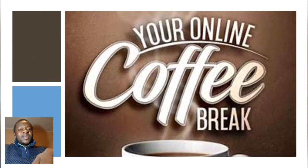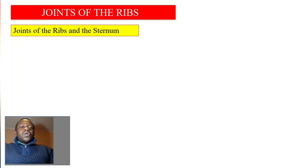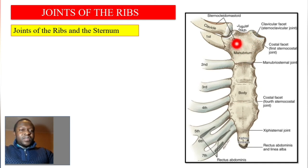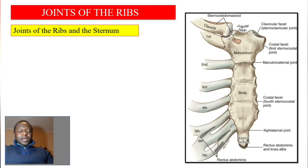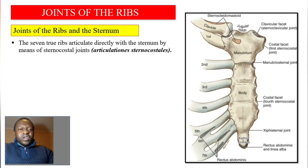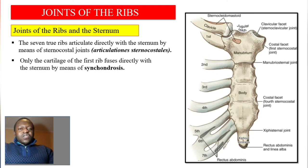Now let's talk about the joints of the thorax. First, the joints between the ribs and the sternum. The sternum has three parts: the manubrium, the body, and the xiphoid process. The ribs have a bone part and a cartilaginous part — the cartilaginous part articulates with the sternum. The first seven ribs, the true ribs, articulate directly with the sternum by means of sternocostal joints, articulationes sternocostales. Only the cartilage of the first rib fuses directly with the sternum by means of syncontrosis.